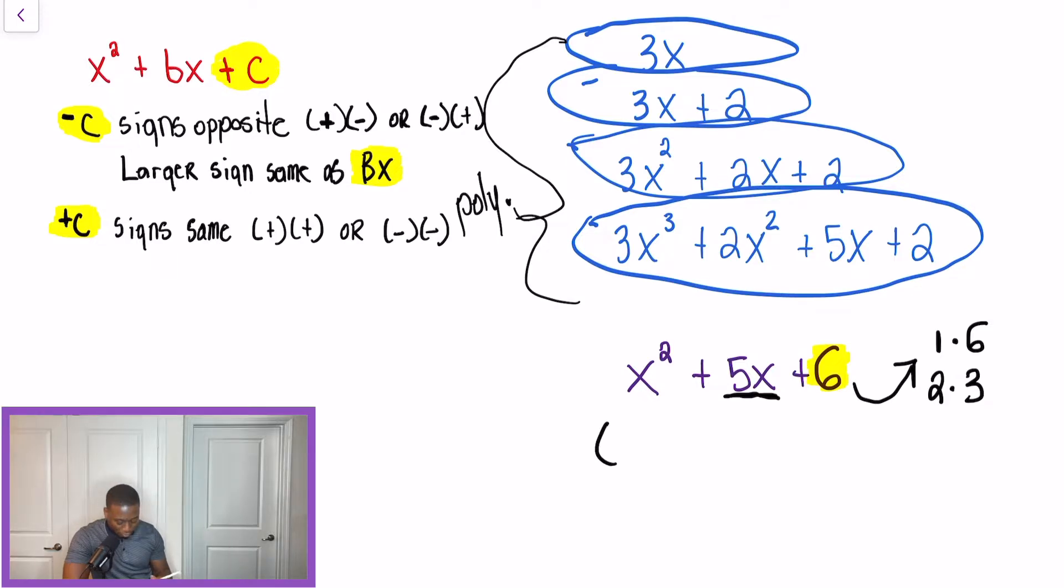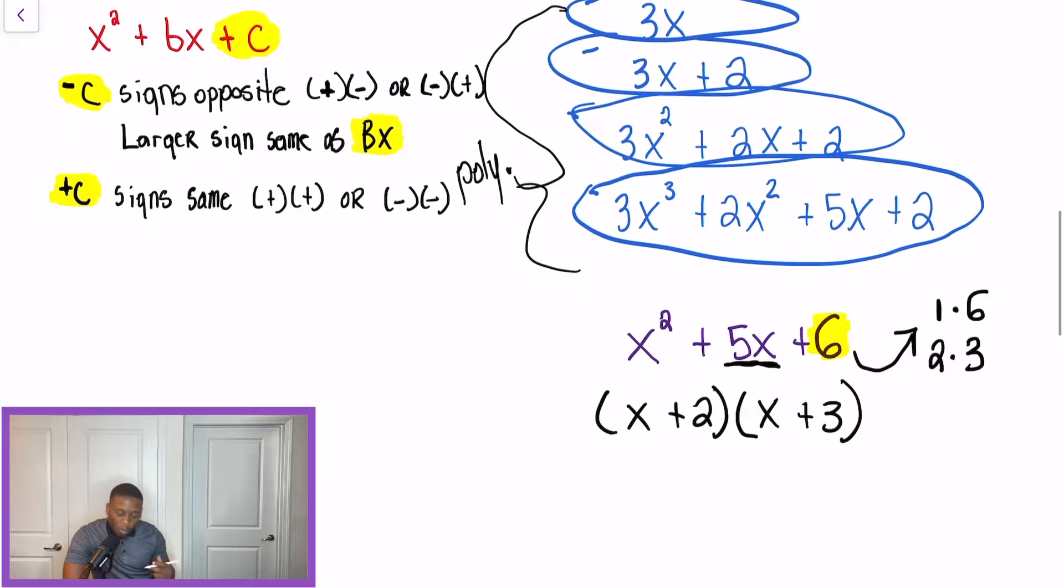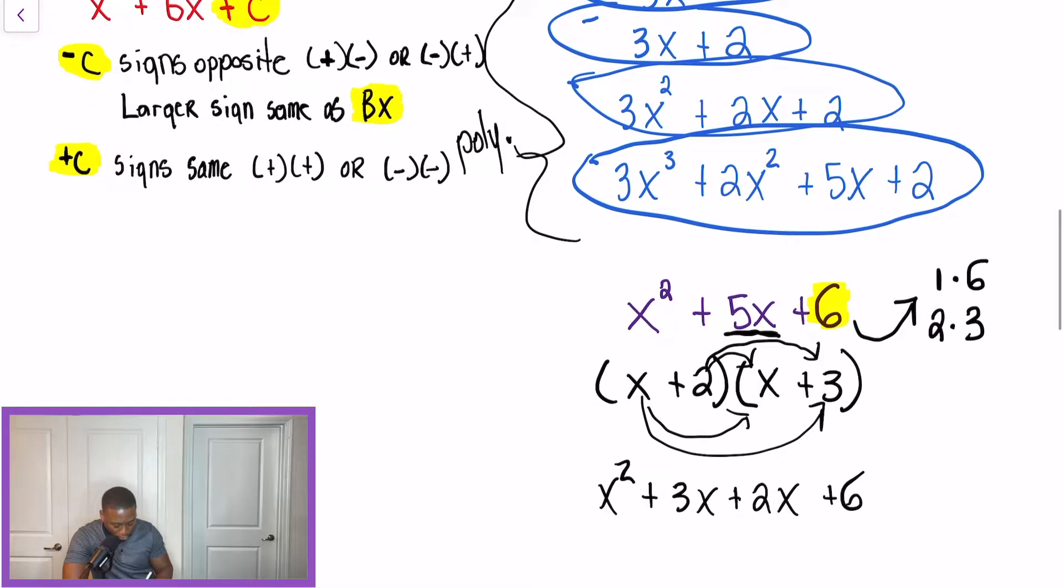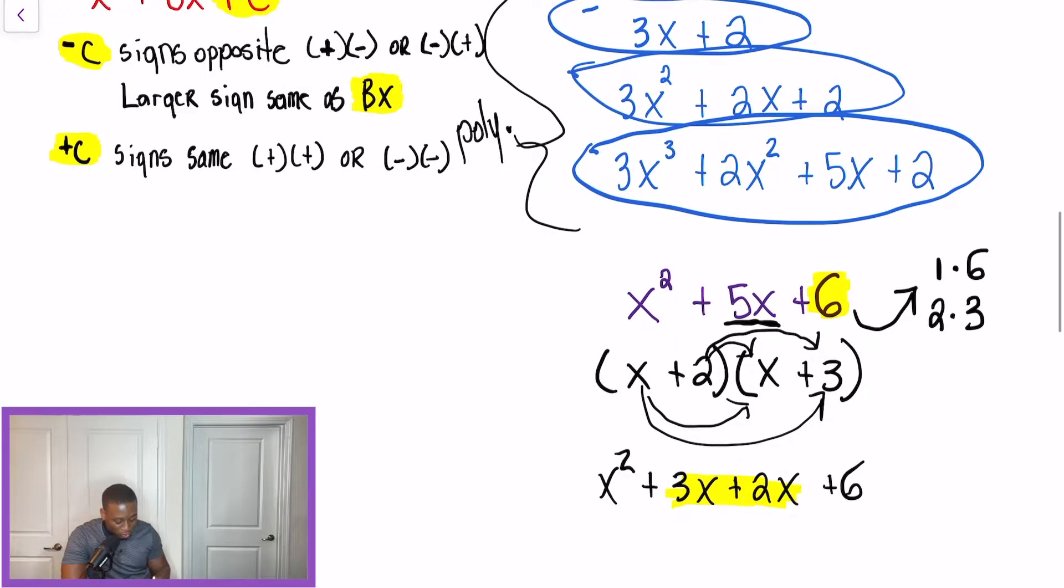So, in a problem like this, our answer would be (x + 2)(x + 3). And to quickly check this, all we have to do is multiply it back together. So, once I multiply x times x, I'll get x². x times 3 will give me plus 3x. 2 times x will give me plus 2x. And 2 times 3 will give me plus 6. So, when we combine these by adding like terms, we're going to get that trinomial that we started off with.